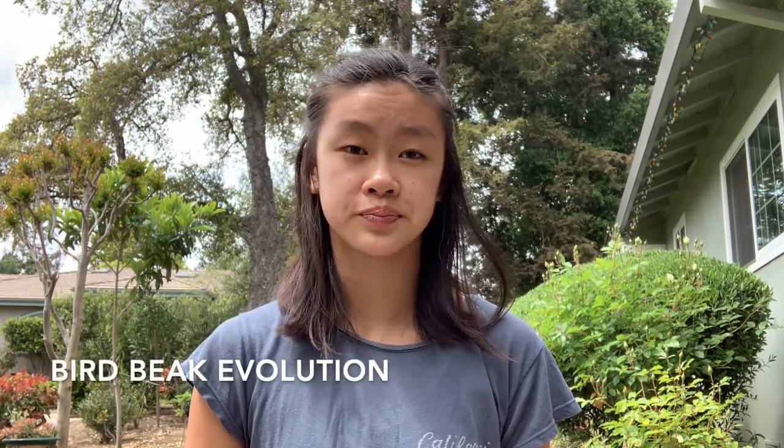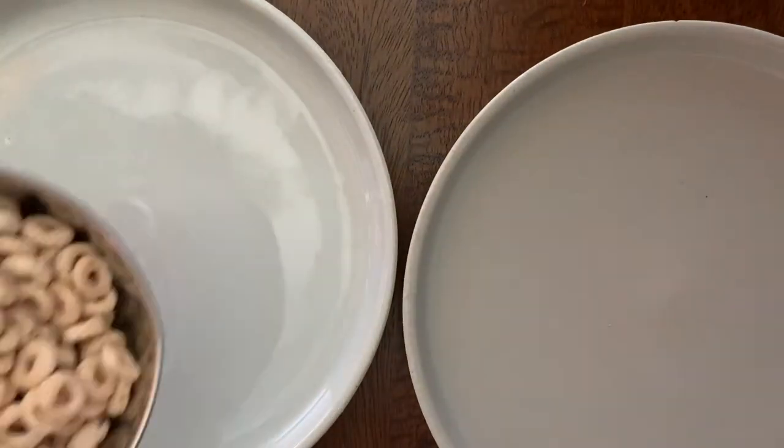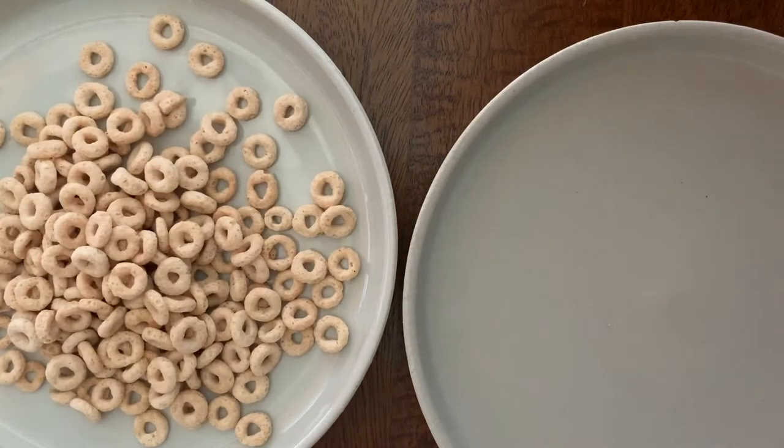The next activity we will be doing is bird beak evolution. Through this we will learn how different beaks on different birds helps them survive. You will each have two paper plates. You can scoop a cup of bird food onto one of the plates that you have.